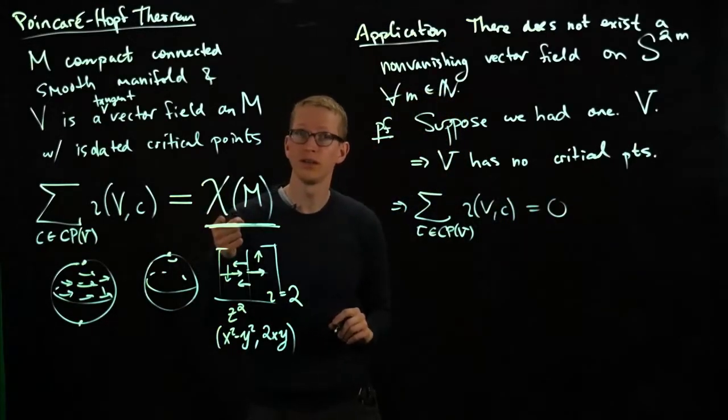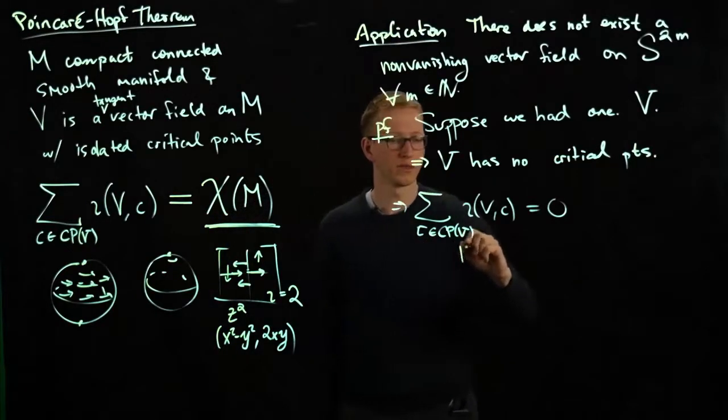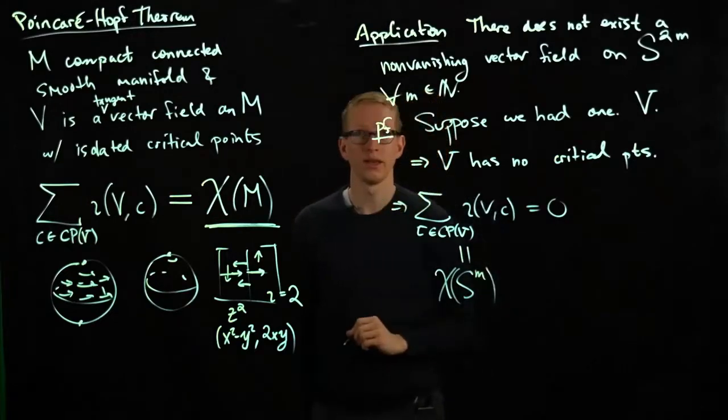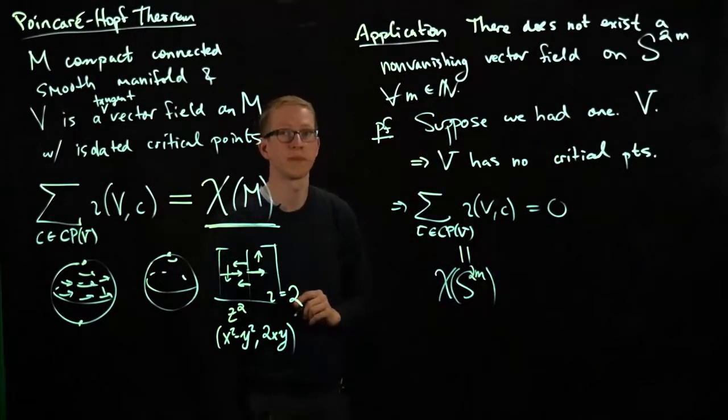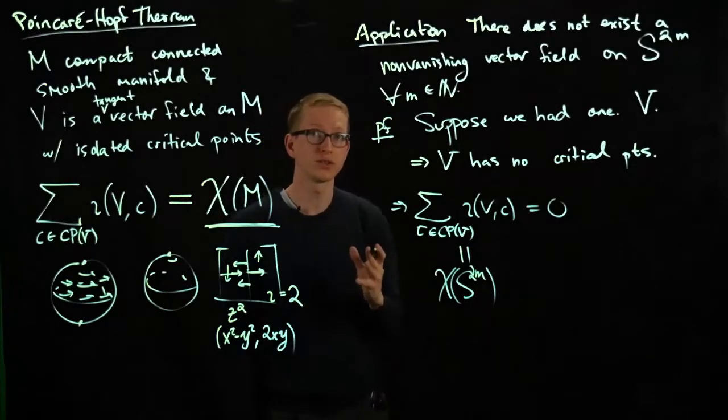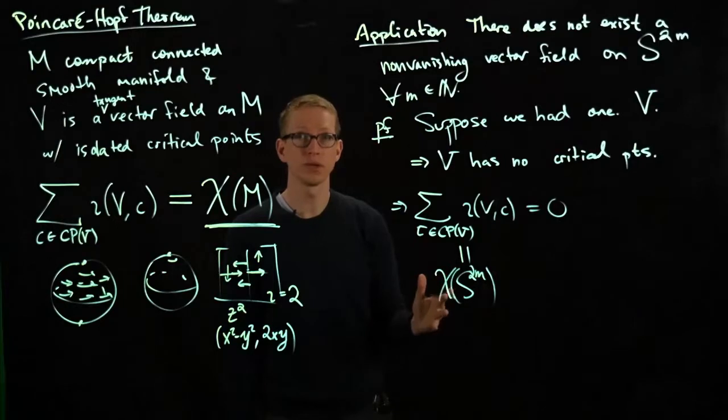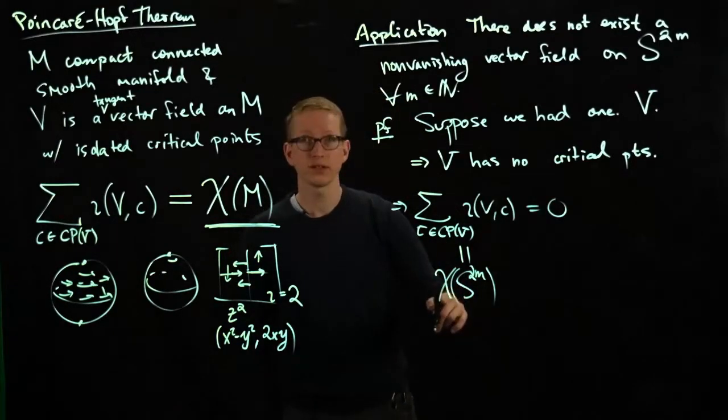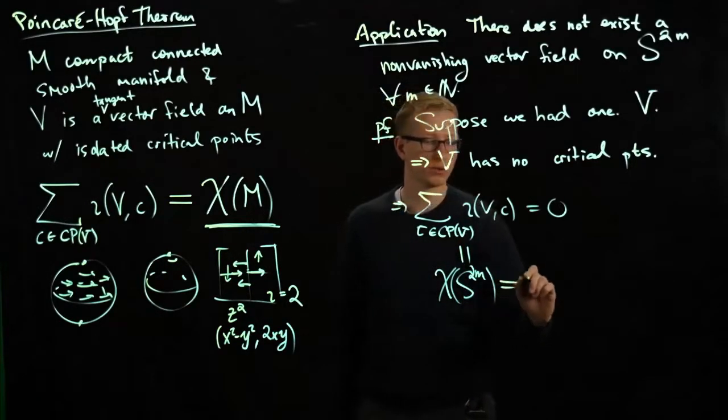But we know that this expression has to equal the Euler characteristic of the sphere—that should be a 2M, right, we're assuming it's of the form 2M. And if you did the exercise from the last video, you were able to prove using the combinatorics formula for N choose K that the Euler characteristic of an even dimensional sphere is always equal to 2